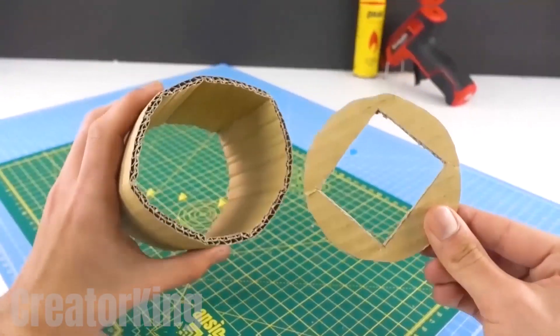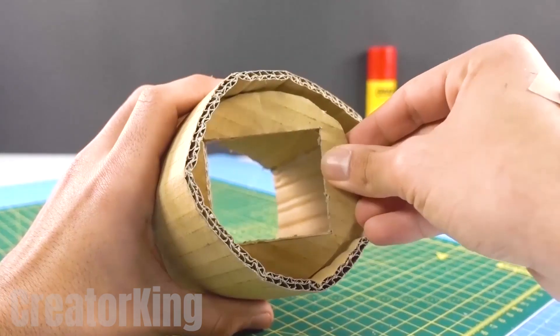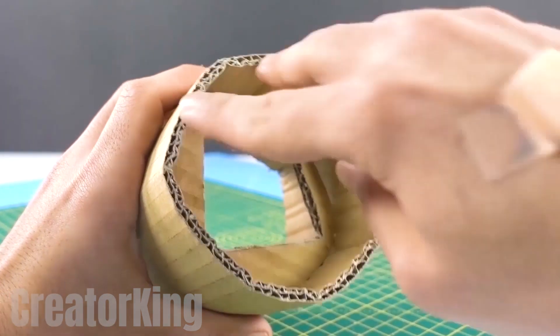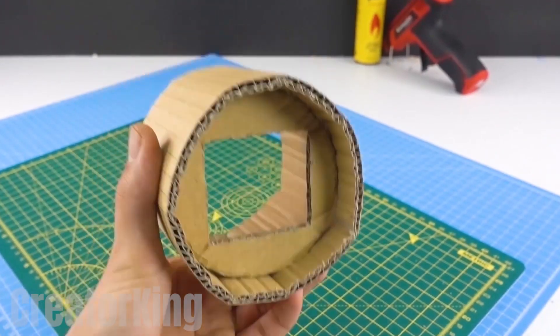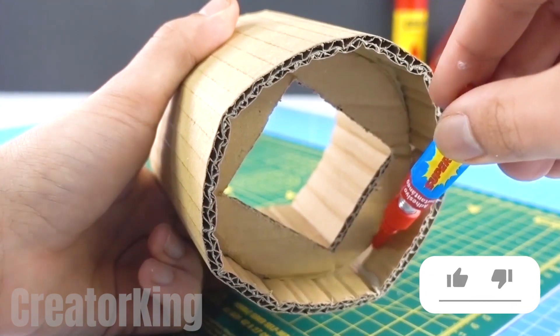Separate the rectangle from the circle. Once we have these two pieces of cardboard, insert the circle into the tube as shown on screen and put some glue on the edges to prevent it from falling out easily.